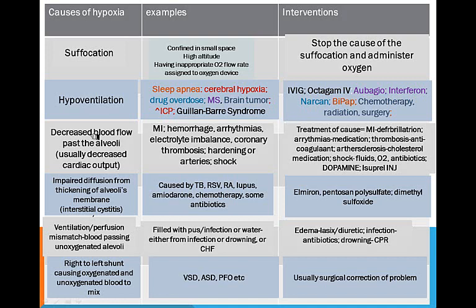Treatment of the cause is how you fix decreased blood flow past the alveoli. For MI it would be defibrillation. For arrhythmias, different medications depending on the cause. Thrombosis — an anticoagulant. Arteriosclerosis — a cholesterol medication. Shock — you would get fluids, O2, antibiotics if it's sepsis, and if it's hemorrhagic shock you fix the cause of the hemorrhage. For very poor cardiac output, dopamine and isoproterenol are two medications commonly given.